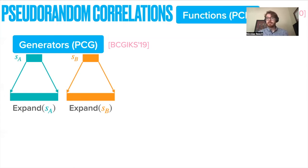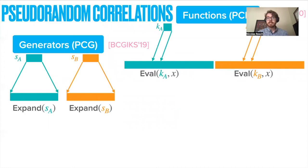Just as we can go from pseudo-random generators to pseudo-random functions, we can also go to pseudo-random correlation functions. Here, Alice and Bob will get two keys, KA and KB, and then they can get point-wise access to, say, an exponentially long string with a whole bunch of correlated randomnesses, which they can use while running their protocol.